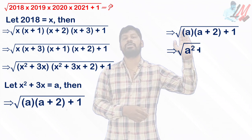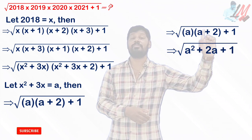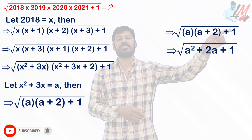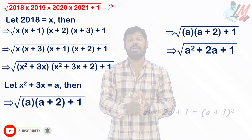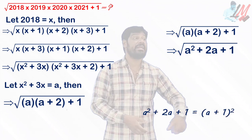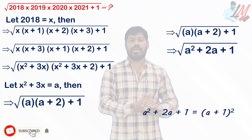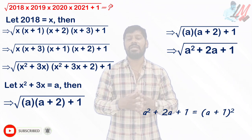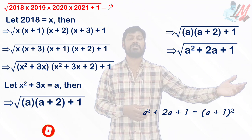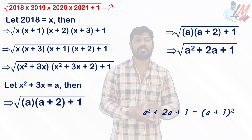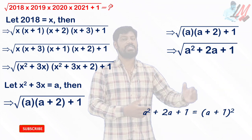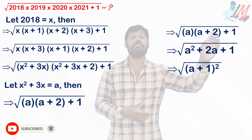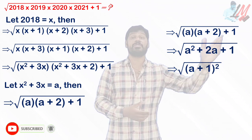A²+2A+1 is nothing but a perfect square, which can be written as (A+1)². Applying the identity (A+B)² = A²+2AB+B², we get A²+2·A·1+1² = (A+1)². So A²+2A+1 = (A+1)².